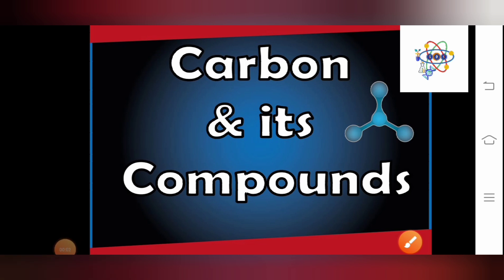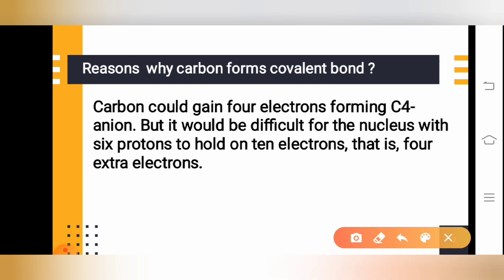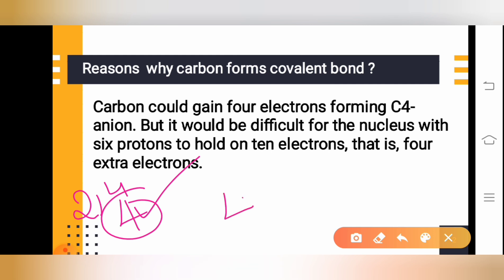Welcome to this session. Let us understand why carbon forms the covalent bond. Carbon has four valence electrons on the outermost shell. Its electronic configuration is 2,4 — it has four valence electrons. Carbon can gain four electrons and become a C⁴⁻ anion.